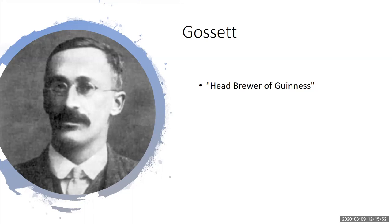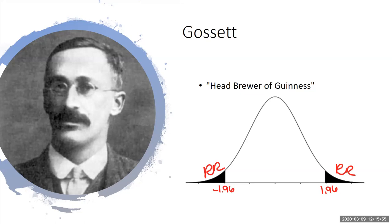Let's say that Gossett was using a typical normal distribution with a rejection region of 1.96 and higher, or negative 1.96 and lower. He was testing the quality of the hops used to make beer. These aren't the true numbers he would have been using, but I want to align this with something familiar.